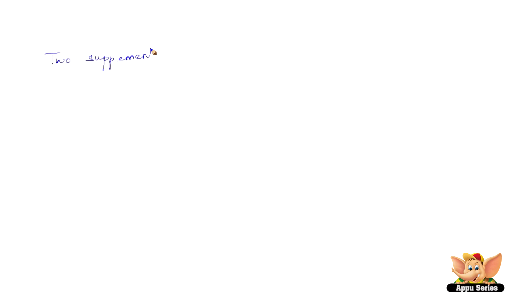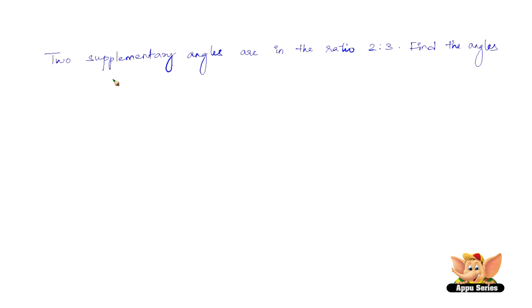Let us solve another one — a slightly different one. Two supplementary angles are in the ratio 2 to 3; find the angles. Since they are in the ratio 2 to 3, let the two angles be 2x and 3x degrees. The sum of 2x and 3x must equal 180 degrees because they are supplementary.